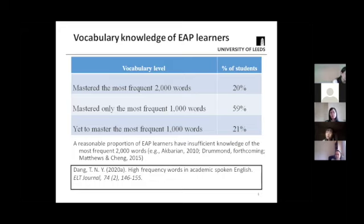The corpus analysis showed that to achieve reasonable comprehension of academic spoken English, learners would need to know the most frequent 4,000 words of general vocabulary. But when we measured the knowledge of these learners, we realized that a number of them had not achieved that goal. So that helped me to understand why academic listening is so challenging for many second language learners. The question then becomes how we can help students to narrow the gap in vocabulary between what they need to know and what they already know.